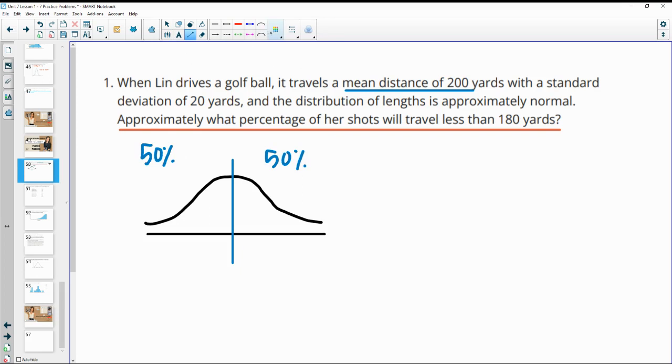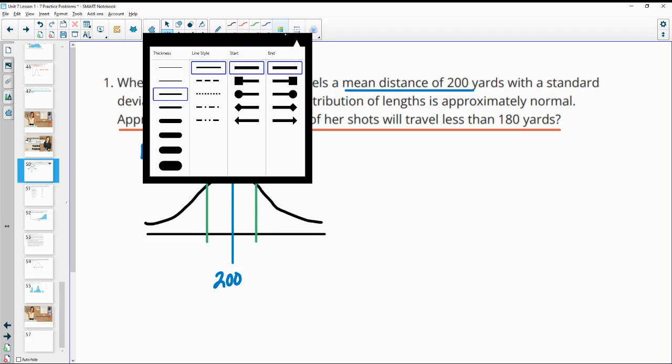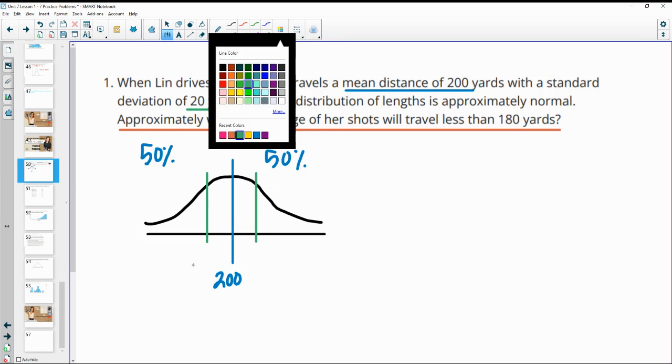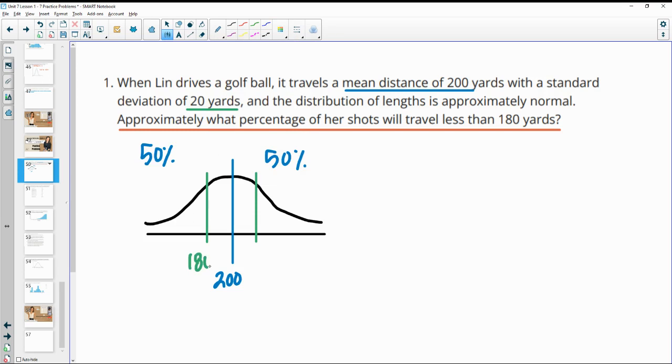Then it's giving you a standard deviation of 20 yards. Let me label this as 200. So a standard deviation of 20. So 20 above 200 is going to be at 220. 20 below 200 would be at 180. I'm going to do below over here, so 180 and then this will be 220.